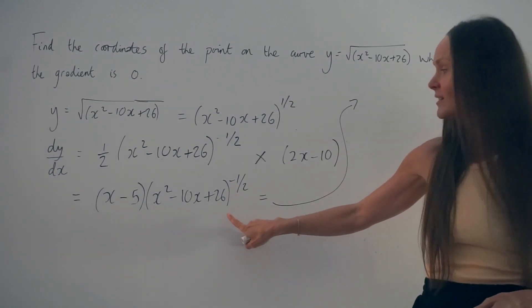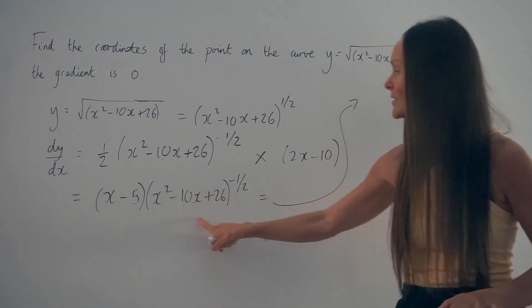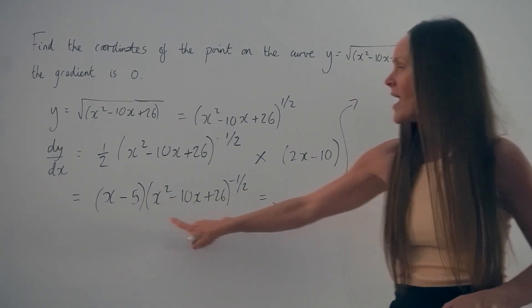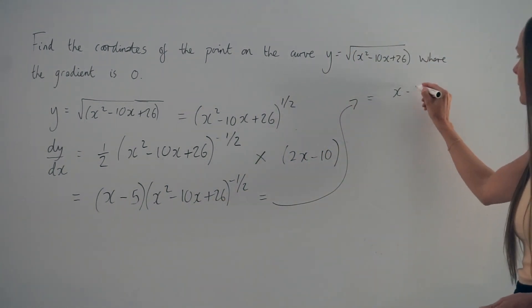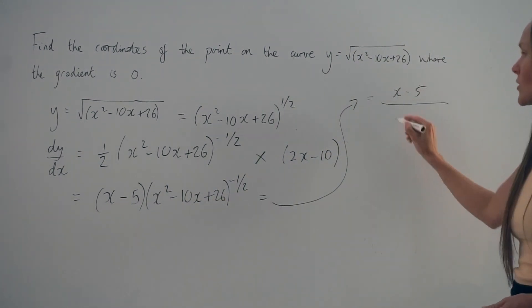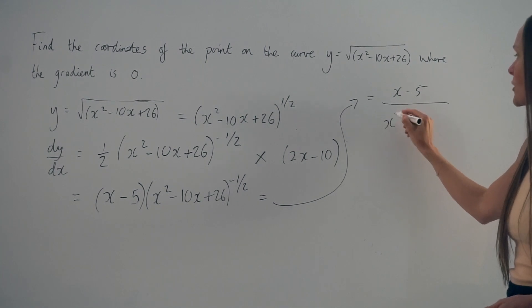That means I can write what's inside this bracket here as the denominator in a fraction. x minus 5 is going to be the numerator. So when I write this expression underneath,